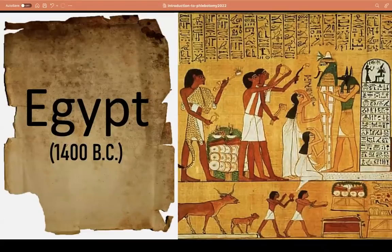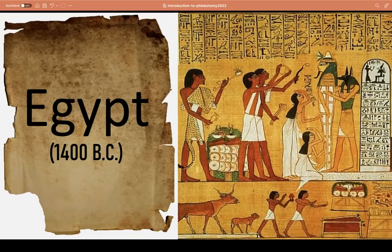The early history of bloodletting can also be traced back to the early Egyptians. During that time, apart from blood, urine and feces were also collected for examination of whatever was ailing the patient. But blood — or the process of letting it out of the body — was once thought to rid the body of disease and provide a cure for almost all ailments.